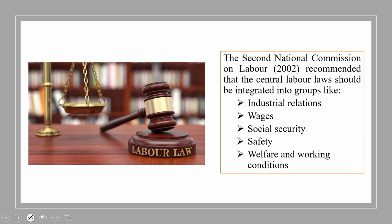As per the central government, before the new labor codes were passed, there were more than 40 central laws and more than 100 state laws on labor and related matters. This was a humongous number, but their effectiveness was not up to the mark. The Second National Commission on Labor, 2002, specifically recommended that central labor laws should be integrated into groups like industrial relations, wages, social security, safety, welfare, and working conditions. The existing laws were archaic, complex, and had inconsistent definitions.